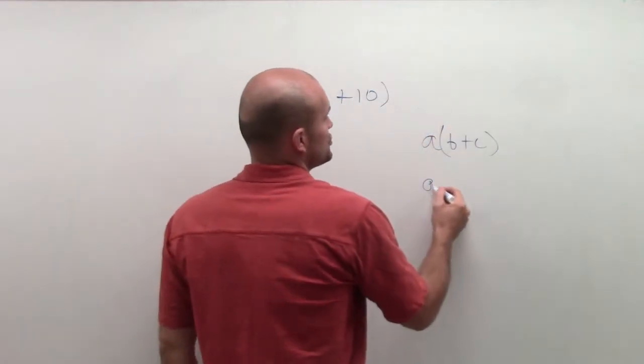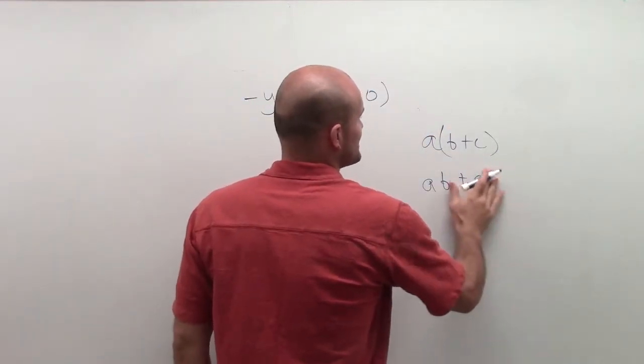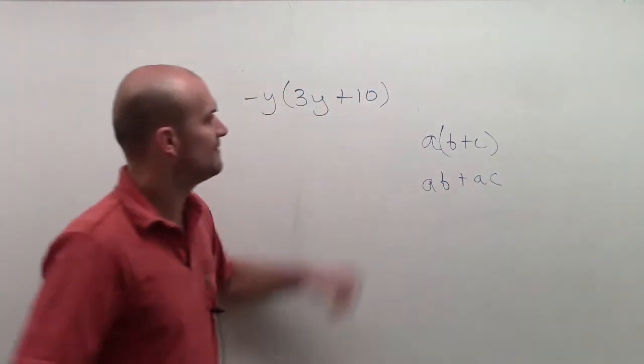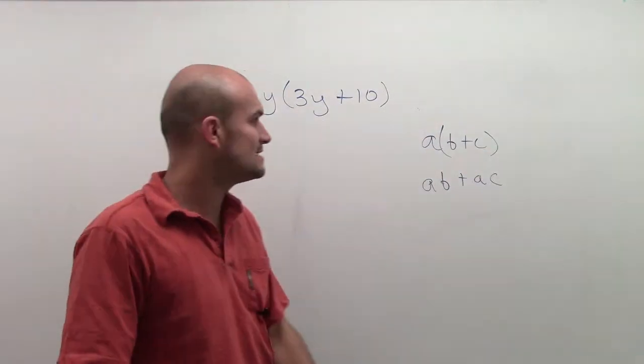I need to make sure I now distribute that by multiplying it by both terms inside my parentheses. So if I have a times (b plus c), that is equivalent to ab plus ac.